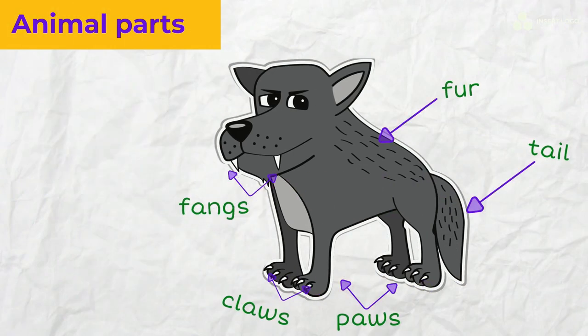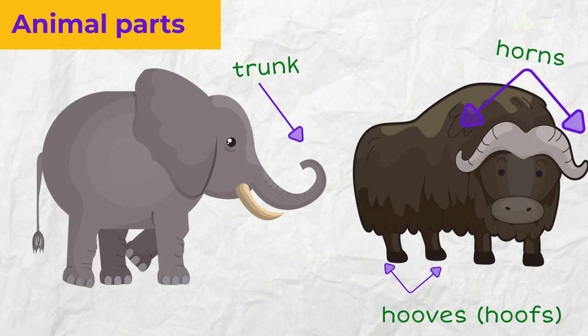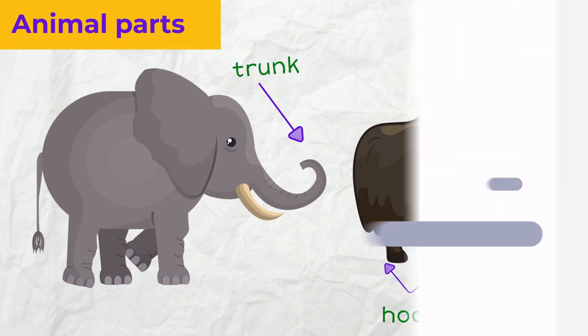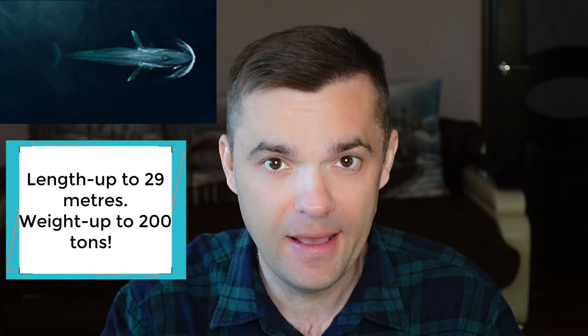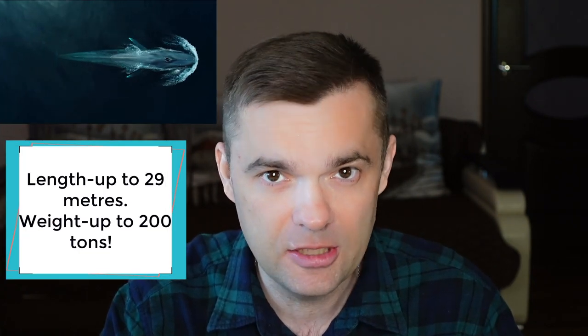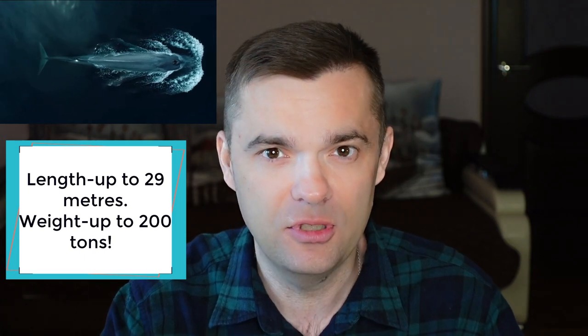Lots of animals have fur, paws, claws, tails, and fangs. An elephant has a trunk, others have hooves and horns. The largest mammal on earth is the blue whale. It can reach the length of 29 meters and weigh up to 200 tons.